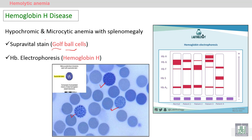On hemoglobin electrophoresis, we will find the Hemoglobin H band, followed by Hemoglobin F, and we will find Hemoglobin H at the end of the slide.